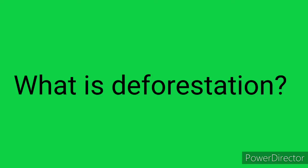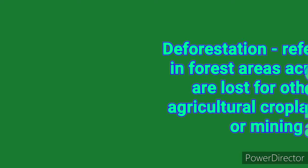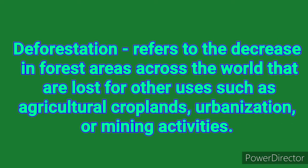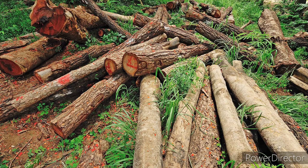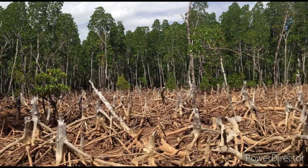What is deforestation? Deforestation refers to the decrease in forest areas across the world that are lost for other uses such as agriculture, croplands, urbanization, or mining activities. Deforestation and forest degradation can happen quickly, such as when a forest is clear-cut to make way for a palm oil plantation or a new settlement. It can also happen gradually as a result of ongoing forest degradation as temperatures rise due to climate change caused by human activity.